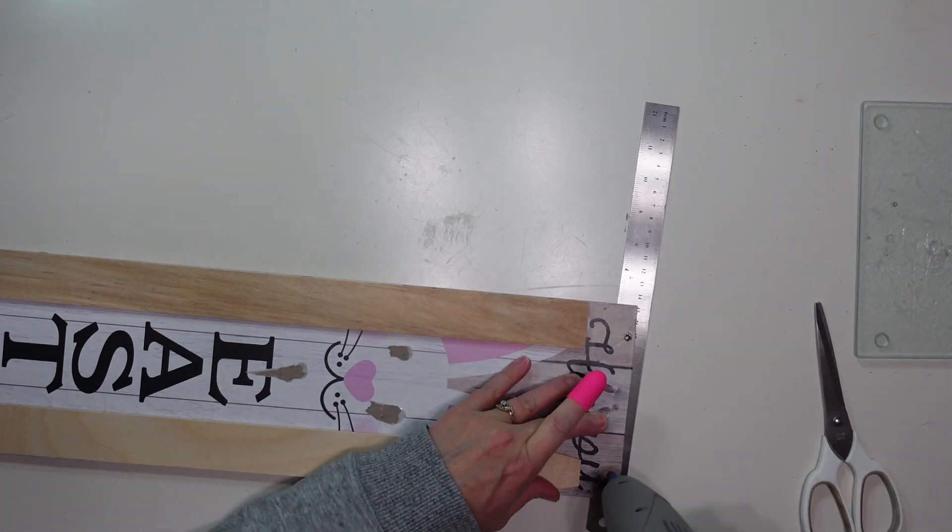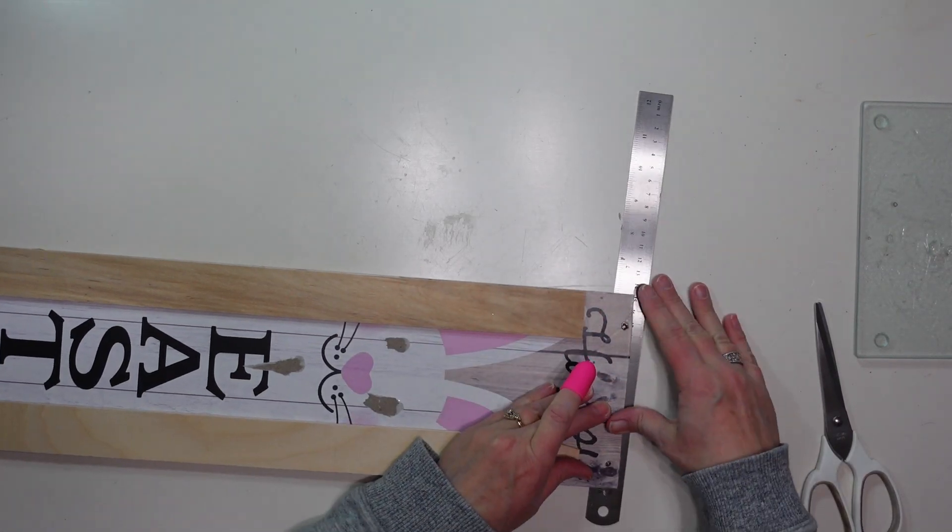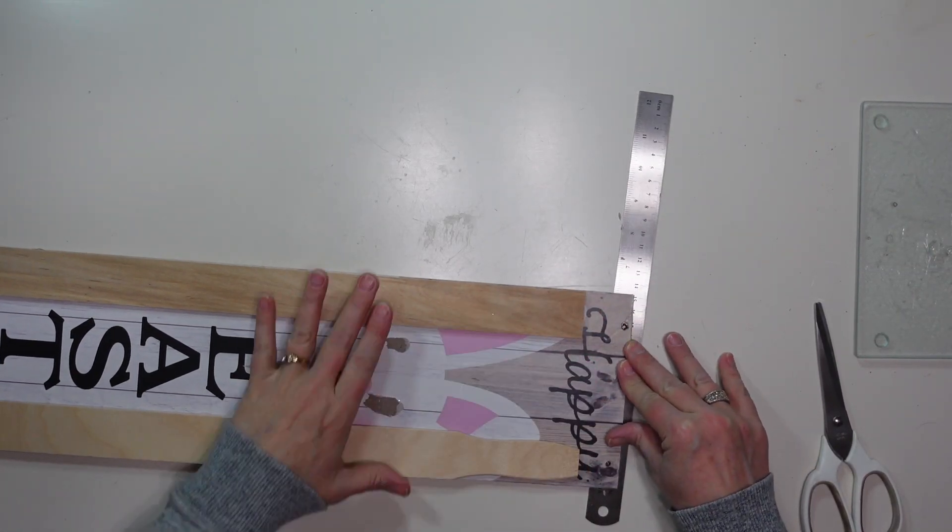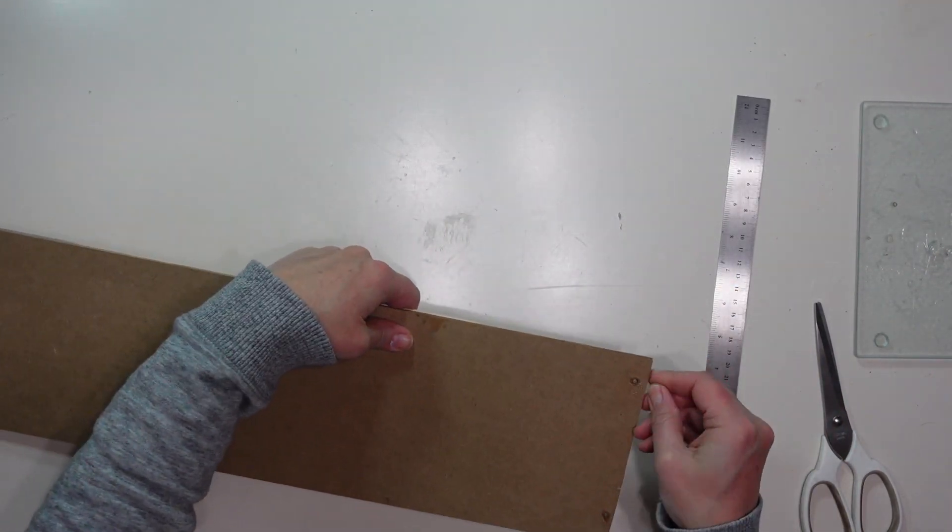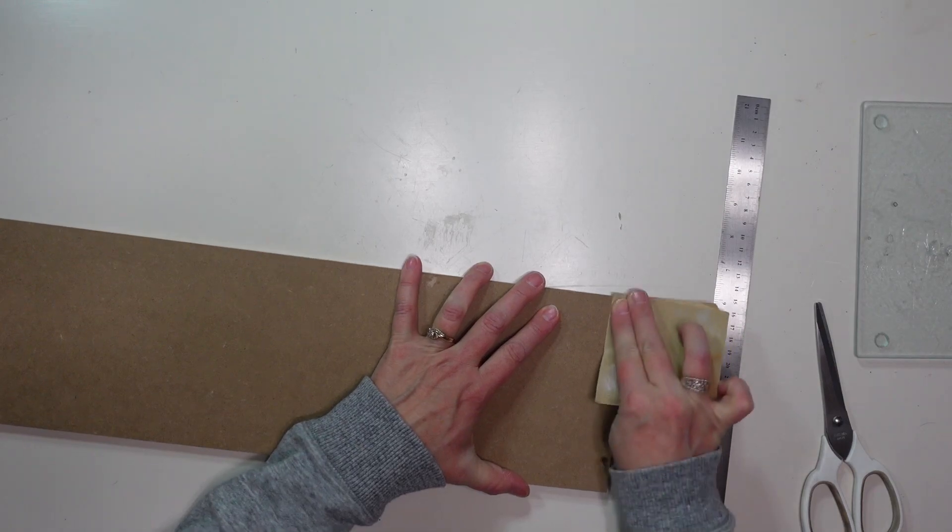I'm also going to add a little bit of hot glue into those holes where the hanger was just to fill them. You could use wood filler, I kind of like using the hot glue and then I just sand off anything that is not smooth.